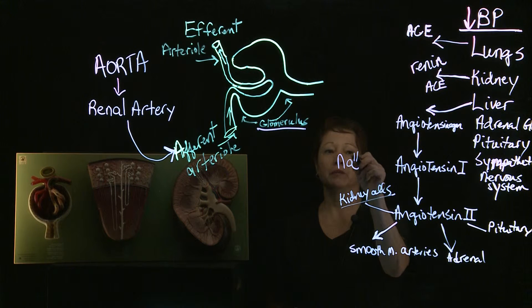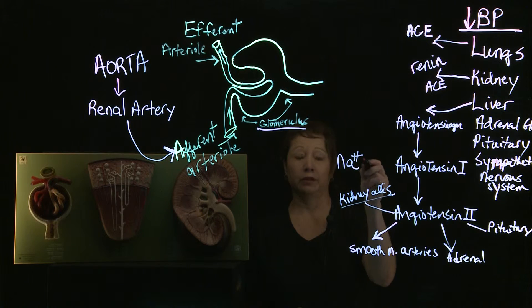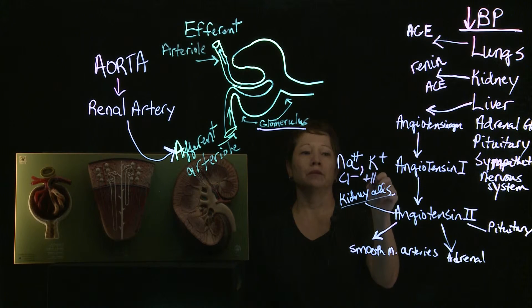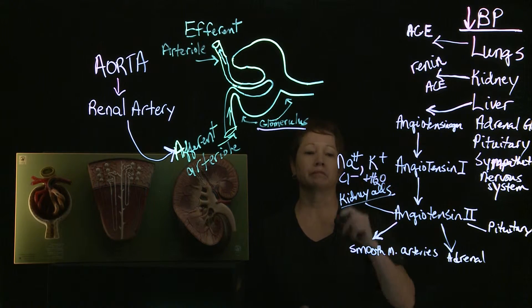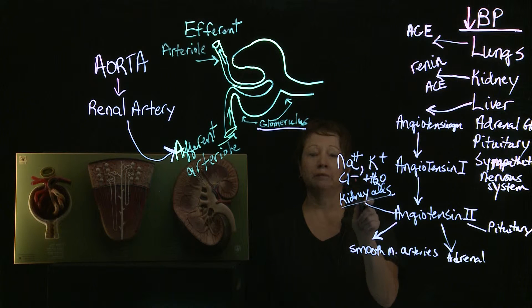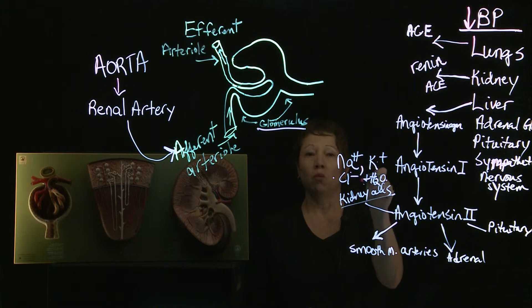This is what we want you to remember: angiotensin II in the tubules of the glomerulus regulates sodium, potassium, chloride, and water. More specifically, it increases retention of sodium and chloride and excretion of potassium, along with retention of water. When we retain sodium chloride — salt — and retain water, that increases blood volume and increases blood pressure.